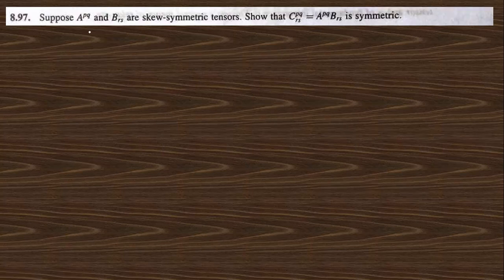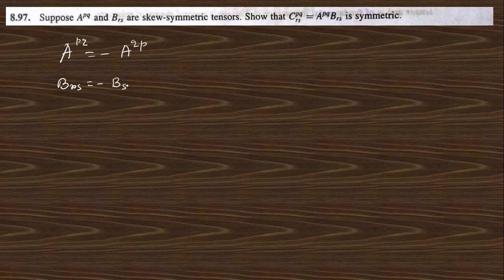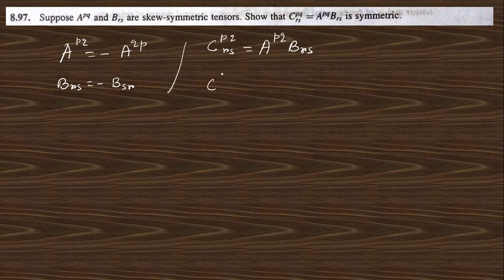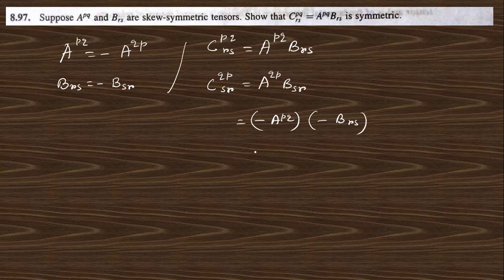Next: suppose A_pq is a skew-symmetric tensor, meaning A_pq equals minus A_qp, and B_rs equals minus B_sr. Now c_pqrs is given as A_pq B_rs. If we change to q,p and s,r: this A_qp is nothing but minus A_pq, and this B_sr is nothing but minus B_rs. So minus times minus is positive, giving A_pq B_rs, which is C_pqrs. So this can be a symmetric tensor.